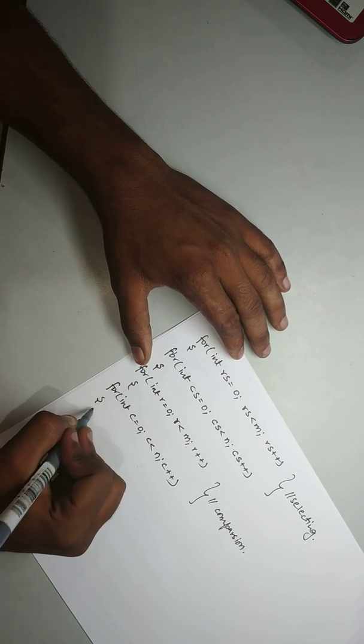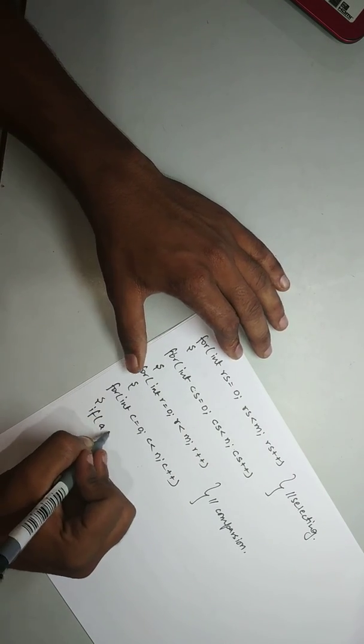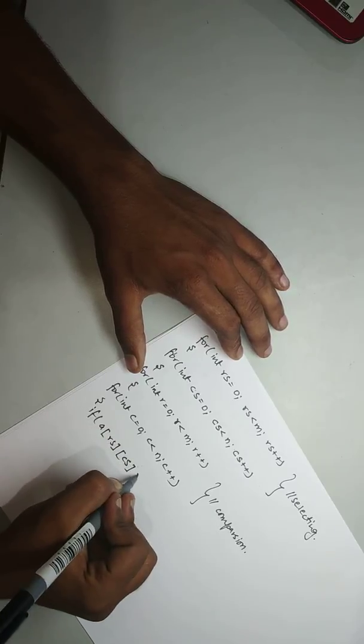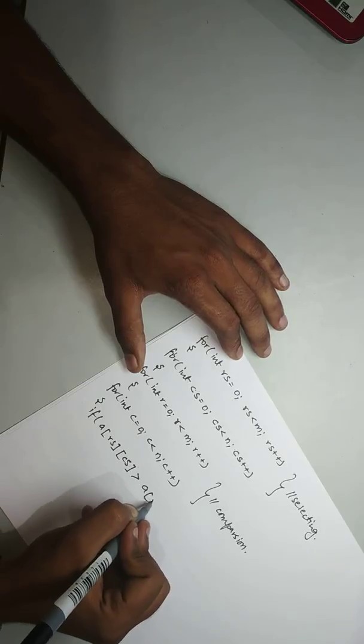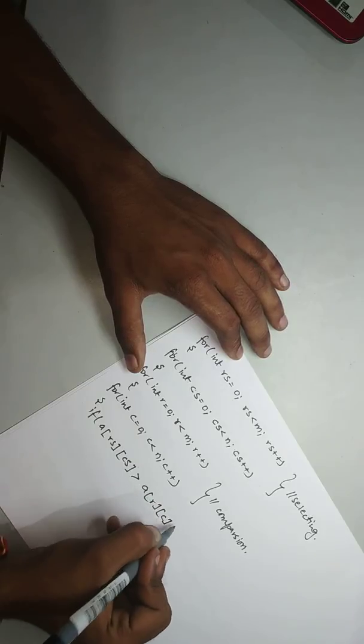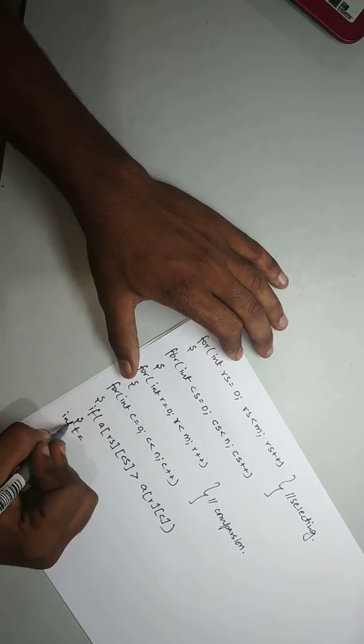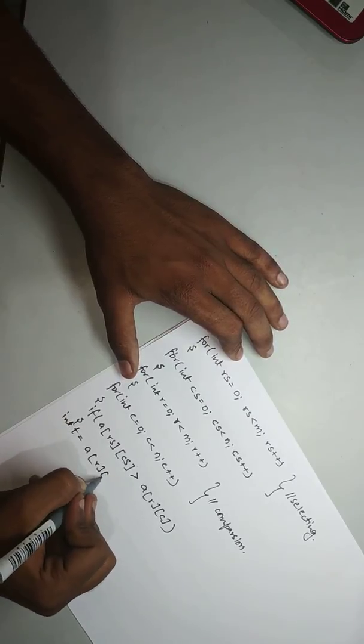So the condition will be if a[r][c] is greater than a[rs][cs], then we will swap the elements. That is we can say int t.